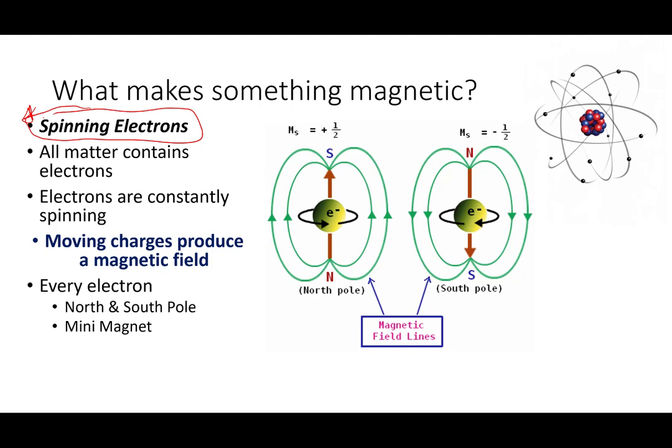If you recall your chemistry, atoms are made up of nuclei that contain protons and neutrons. Around that are electrons that are whirling all over the place. Not only are the electrons whirling on the outside of those atoms, they are also spinning and they are spinning like a little top. They are just spinning like these little tops and they're just rotating around.